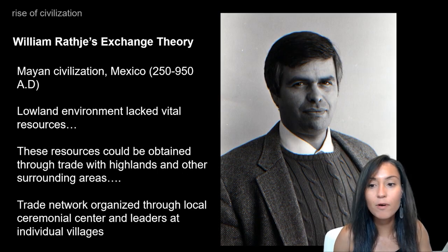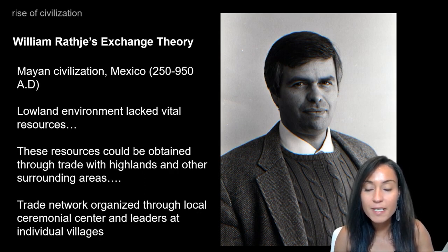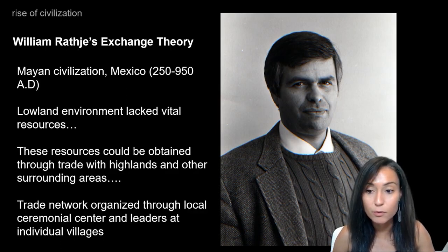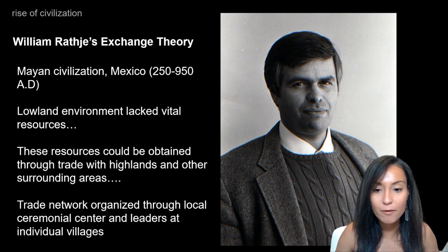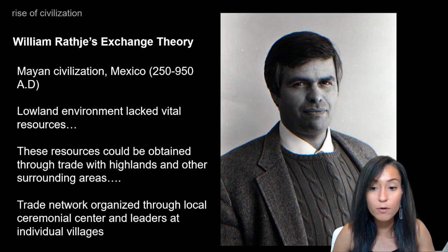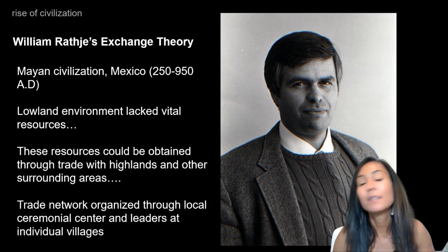One example of this kind of trade-technology feedback loop is an exchange theory proposed by William Rathje, who argued that the lowland Maya environment was originally deficient in vital resources — things like salt, stones for maize grinding, or obsidian to make stone tools. These goods could only be obtained from nearby highlanders from the Valley of Mexico and other regions through trade networks. Such trade networks couldn't be maintained and organized by individual villages alone. As a result, long-distance trade networks organized through local ceremonial centers and leaders developed. Over time, these networks became the major states that make up the Mayan Empire.